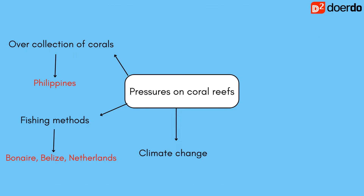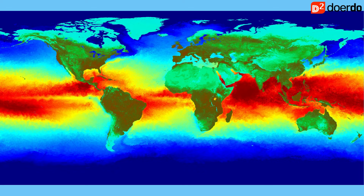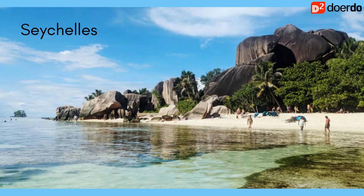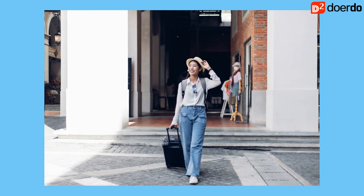The third and most significant threat is climate change. It causes rapid changes in sea temperatures and sea levels, which can lead to coral bleaching due to the loss of algae in high sea temperatures, similar to what happened in Seychelles.